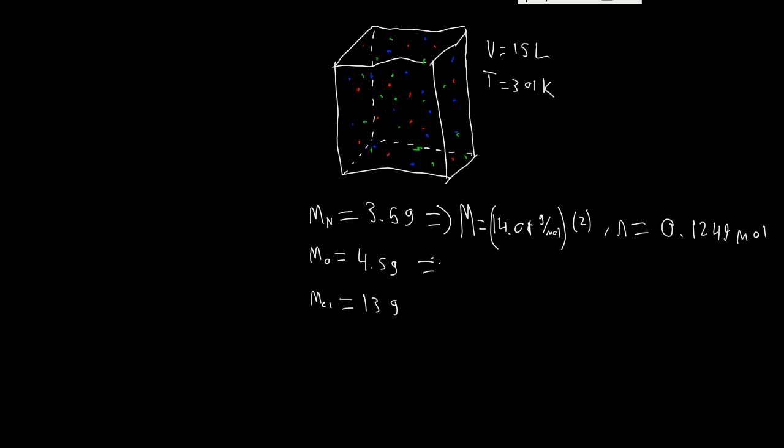Molecular mass of oxygen, M equals 32 for the diatomic oxygen. Number of moles, 4.5 grams divided by 32 grams per mole, we're going to get 0.1406 moles.